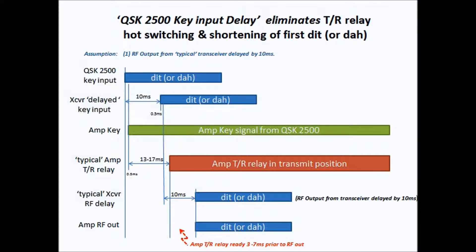On the previous view graph we saw the problem created if you have a slow amplifier TR relay. Now we're going to look at what the QSK 2500 does to alleviate the situation.